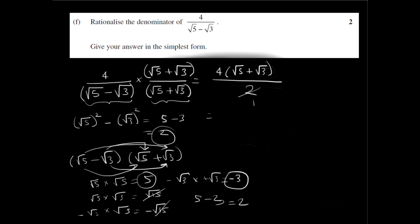So this is a 2 here. And we can cancel the 2 with the 4. The 4 becomes 2. And the answer is 2 outside of square root of 5 plus square root of 3. So that's our final answer.